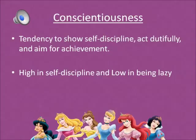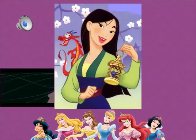Next is the letter C for conscientiousness. This is the tendency to show self-discipline, act dutifully, and aim for achievement. People high in conscientiousness have self-discipline and are low in laziness. High examples include dutifulness, order, deliberation, and achievement striving. Low would be aimless, lazy, and quitting. A princess with these traits would be Mulan.